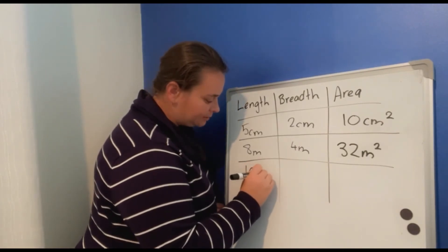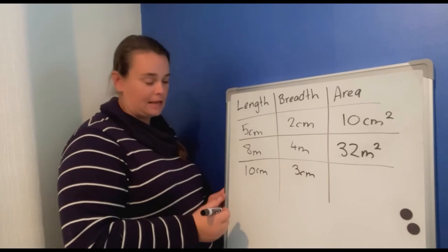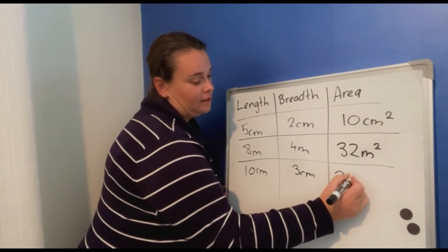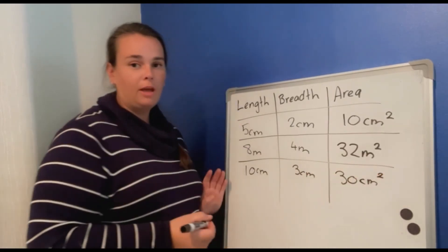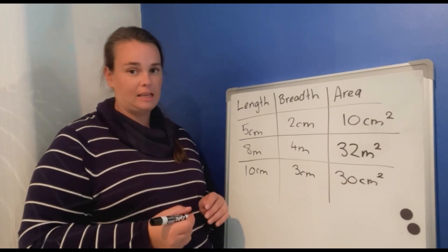Ten centimeters and three centimeters. First step, ten times three is thirty. Centimeters. And a little two on top to show that we have squared it to find the area of the inside.